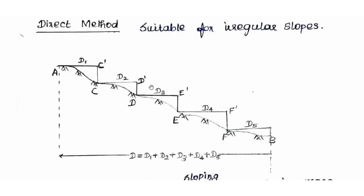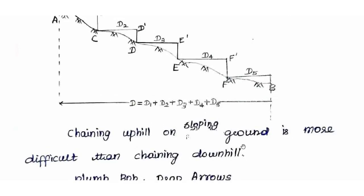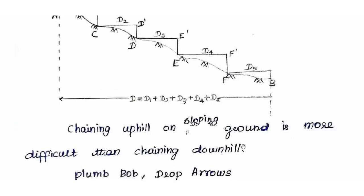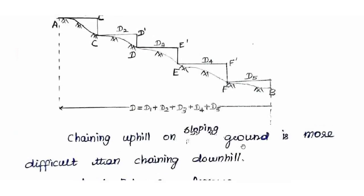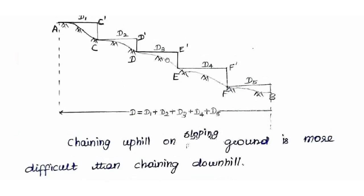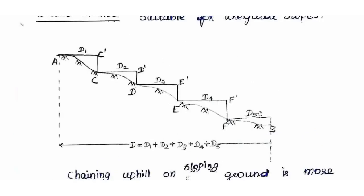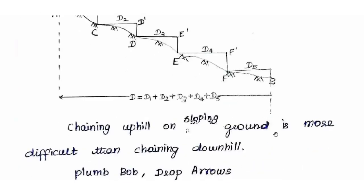The measured segment is called D1. The same procedure is repeated: when the follower moves, the leader moves to point C. This is the direct method. Chaining uphill on sloping ground is more difficult than chaining downhill. Chaining uphill means measuring from B to A, while chaining downhill means measuring from A to B at a lower level. Downhill is easier compared to uphill movement.